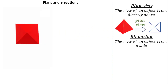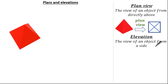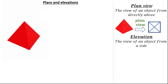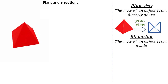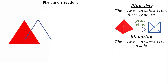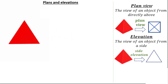Now let's have a look at the word elevation. Elevation is the view of an object from a side. Looking at our pyramid, imagine if you were standing directly in front of that side. Rotating it around, you would see this two-dimensional shape. This represents our side elevation — the side view of our pyramid.